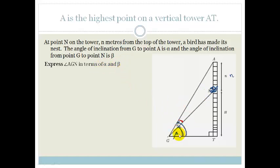Okay, that's pretty easy because we've got the whole of this angle is alpha, and this angle there is beta, then obviously this little angle here is going to be, so angle AGN is just going to be alpha minus beta. So that angle there is going to be alpha minus beta.